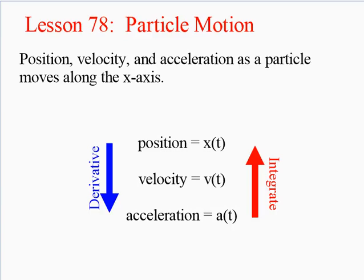Lesson 78 deals with particle motion, where we discuss position, velocity, and acceleration as a particle moves along the x-axis. Given one of the functions, we can find the others. If we have position, we take the derivative to find velocity; if we have velocity, we take the derivative to find acceleration. We can go the other way by integrating: integral of acceleration gives velocity, then position.